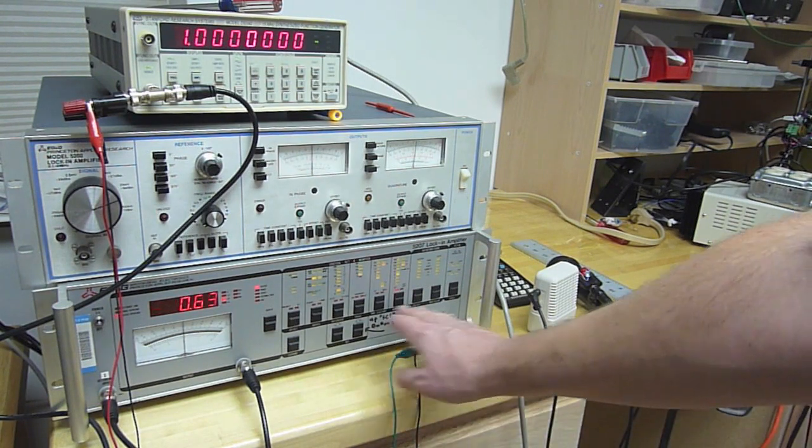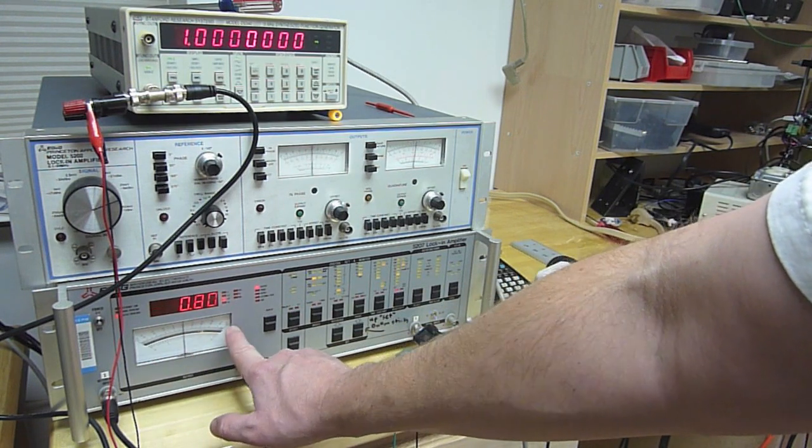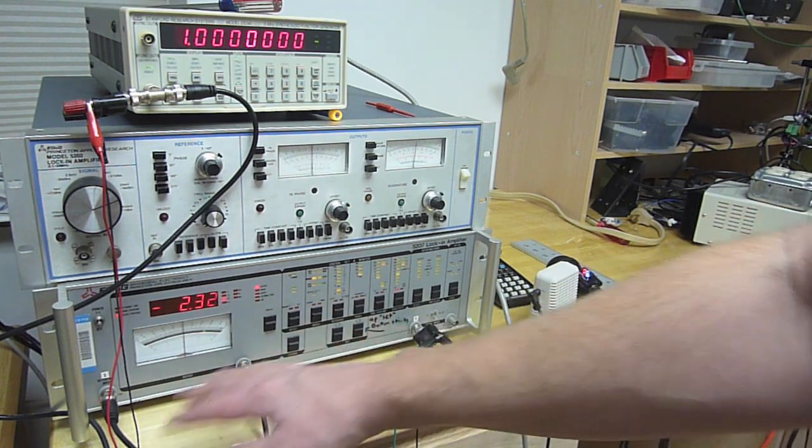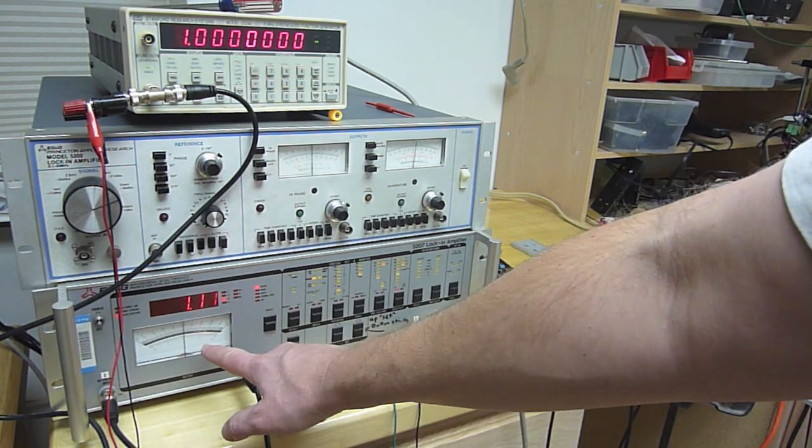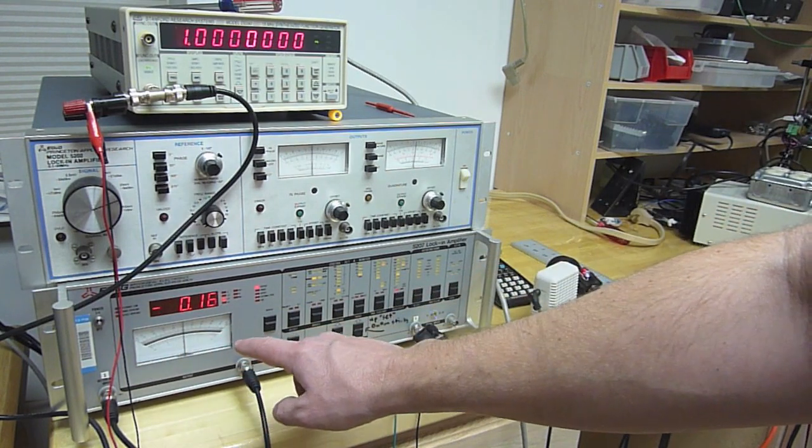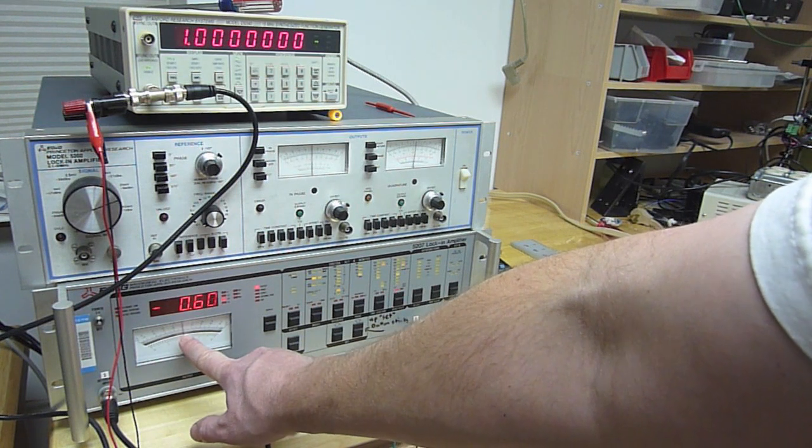When these two signals are in phase, the value we get out of the lock-in will be maximized. When they're 180 degrees out of phase, we'll get the same magnitude of signal, but it'll be negative. If the phase difference is 90 or 270 degrees, then we'll get a null on the meter.